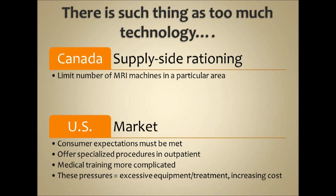There is such a thing as too much technology. Canada employs supply-side rationing — for example, limiting the number of MRI machines in a particular area so everybody can access at least one if they need one. In the U.S., the market decides how many MRI machines exist and where they go. Consumer expectations must be met, specialized procedures are offered outpatient, and medical training is more complicated. These pressures equal excessive equipment and treatment, increasing cost — so in the U.S., there is too much technology in healthcare.